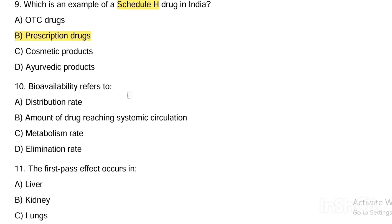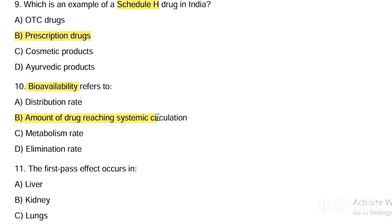Next question. Bioavailability refers to: Option A, distribution rate. Option B, amount of drug reaching systemic circulation. Option C, metabolism rate. Option D, elimination rate. Answer is Option B — bioavailability means amount of drug reaching the systemic circulation.